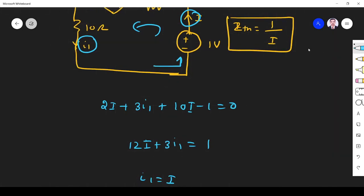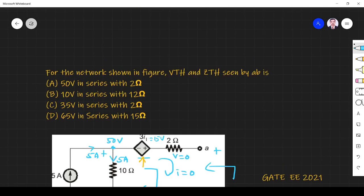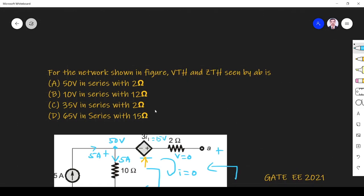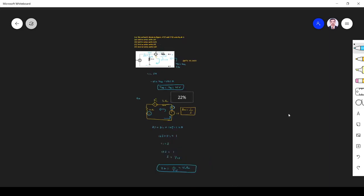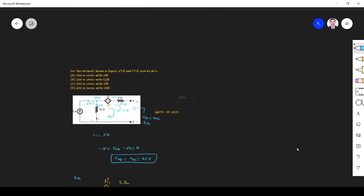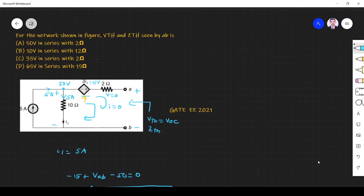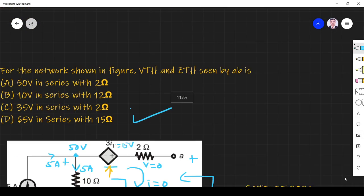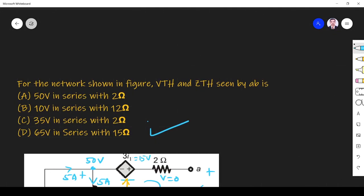Vthevenin is 65 volts and Zthevenin is 15 ohms. Which answer is correct? This option - 65 volt and 15 ohm. This answer is correct. Thank you.